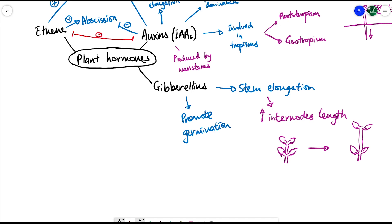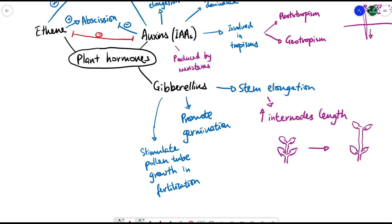Another thing gibberellins can do is promote germination — promoting plant growth early on when the plant is still in seed or bud form. Even before that, gibberellins promote pollen tube growth in fertilization, aiding the fertilization process. You can see that gibberellins are very much involved in the growth of a plant, and in some sense work together with auxins to promote the general growth and development of the plant — a concept we refer to as synergism.